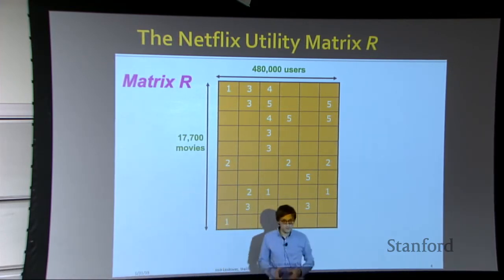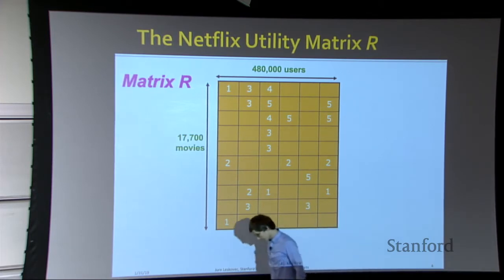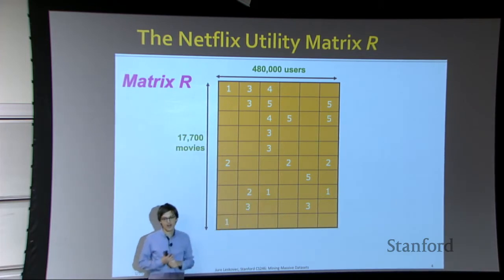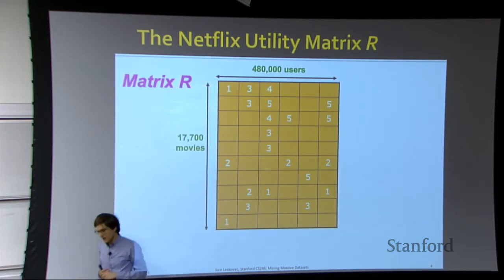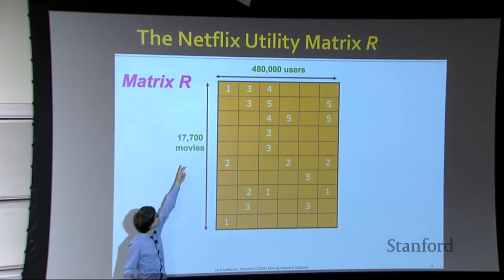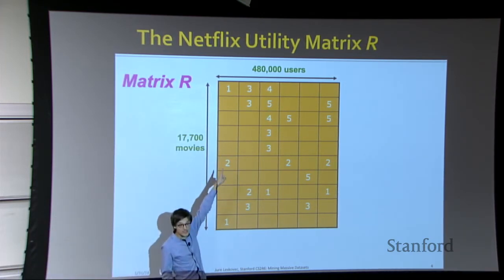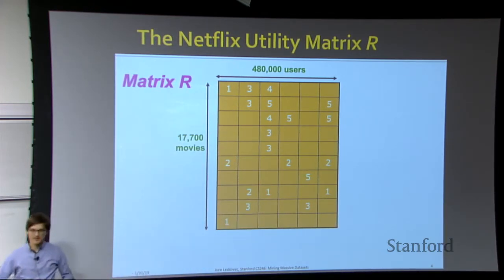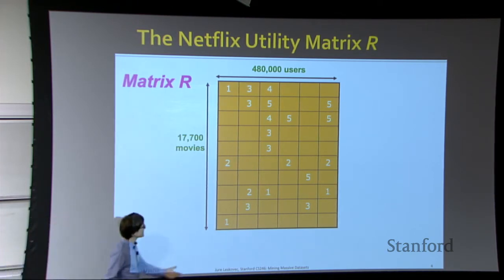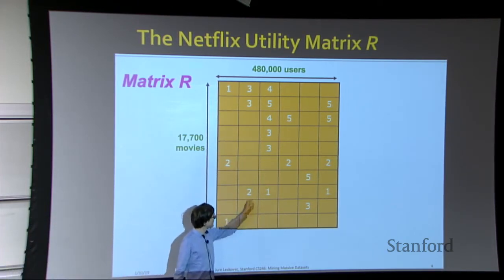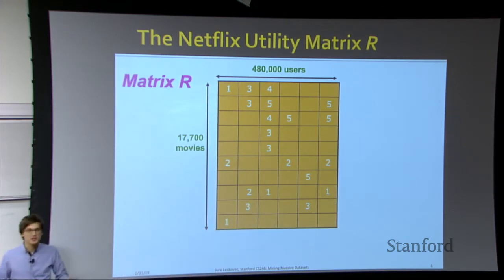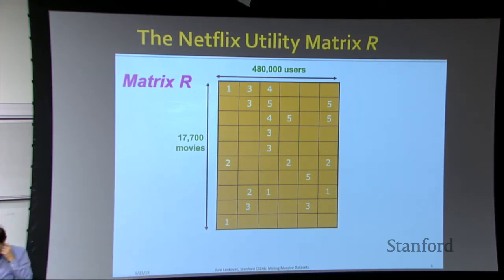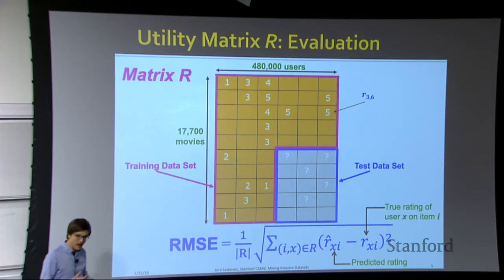This matrix has 18,000 rows — each row is a different movie — and half a million columns, each representing a different user. We are given 100 million non-zero elements, but even though 100 million seems a lot, this matrix has billions of entries. So the matrix is very sparse — it's full of zeros and mostly empty. That is our data: for every user, how did they rate the movies? We measure success by how well we can predict missing entries.